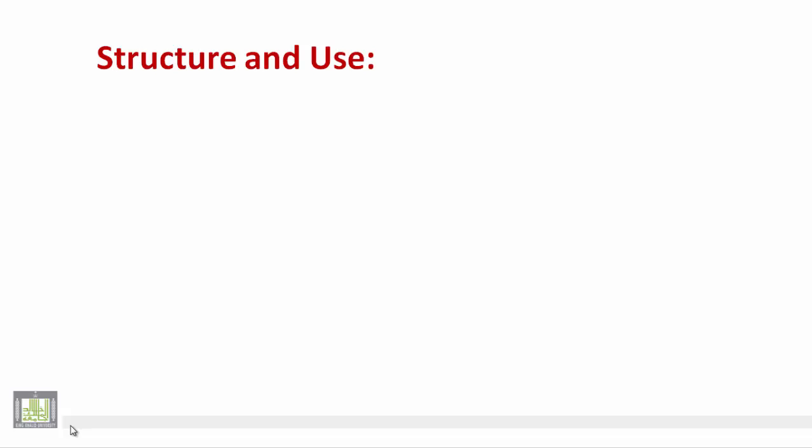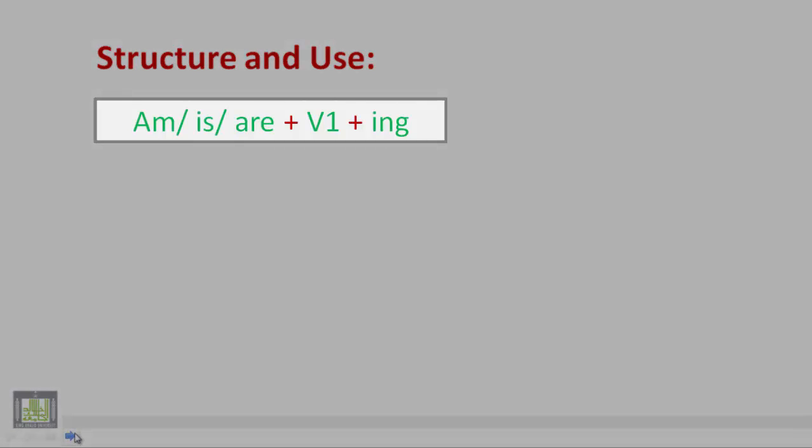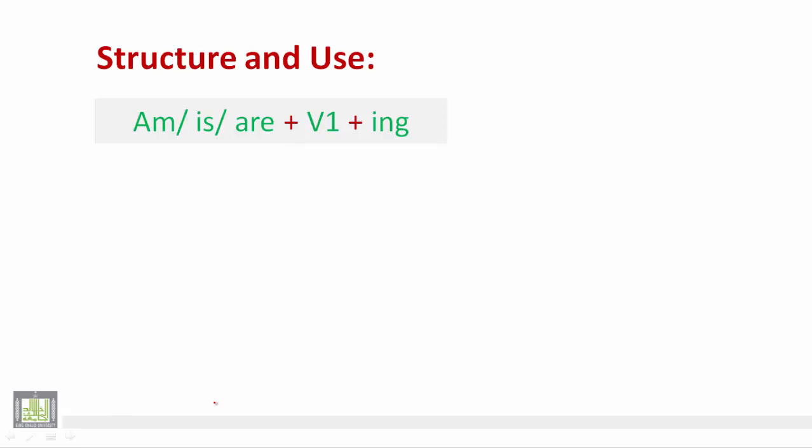The structure of this tense is: am/is/are plus verb one plus ing. Of course we use 'am' with I, we use 'is' with singular nouns or what substitutes for them: he, she, it.